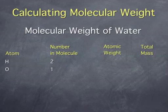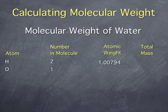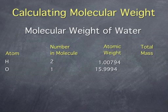We then take the atomic weights of the atoms from the periodic table. For hydrogen, this is 1.00794. And for oxygen, it is 15.9994.